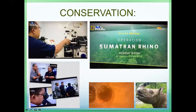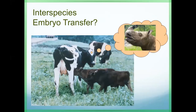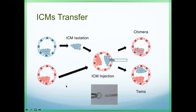For inner cell mass (ICM) embryo transfer, we collect the inner cell mass from the donor blastocyst by immunosurgery technology. We inject this ICM into a host blastocyst. Two possibilities: if the ICM develops together with the host ICM, we may get a chimera; if we keep the cell masses separate, we can get twins of different species.